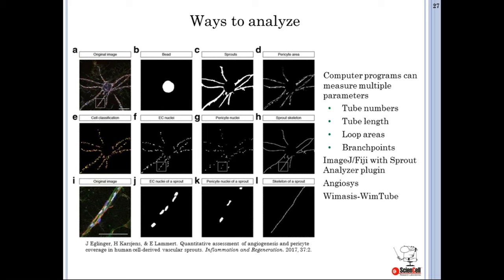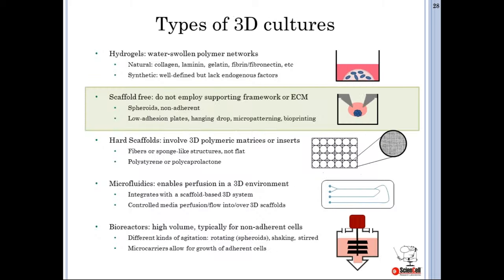To analyze these gel dots, you can use free software available online. In this example, researchers used ImageJ with the Sprout Analyzer plug-in to quantify both the average length of sprouts and pericyte coverage in a bead-based sprouting assay with differential staining.